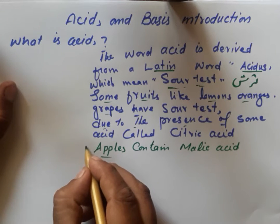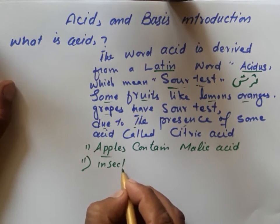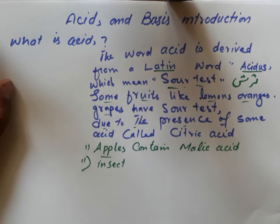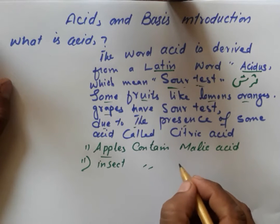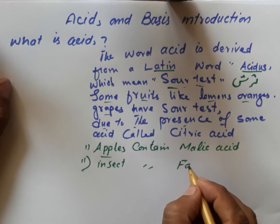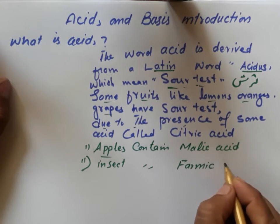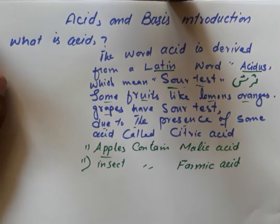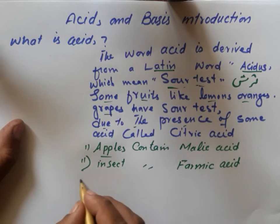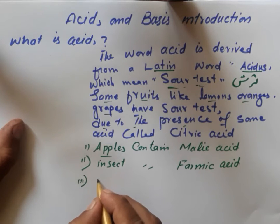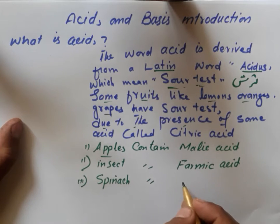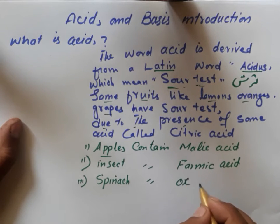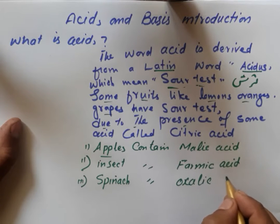We have another example of an acid: formic acid, which is found in insects. Spinach contains oxalic acid.